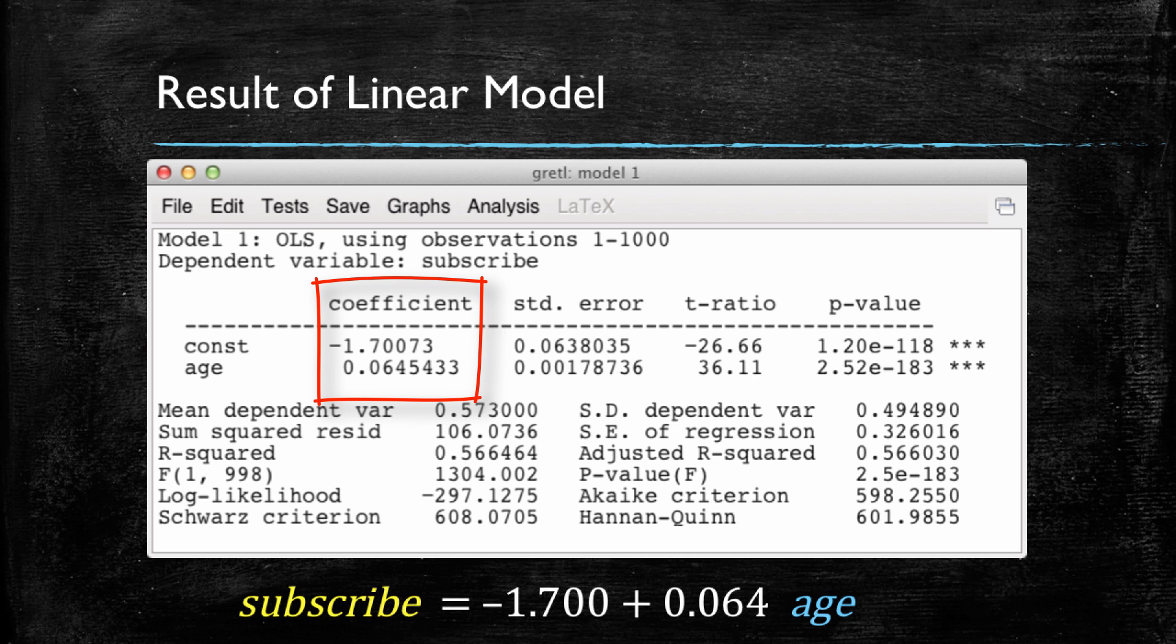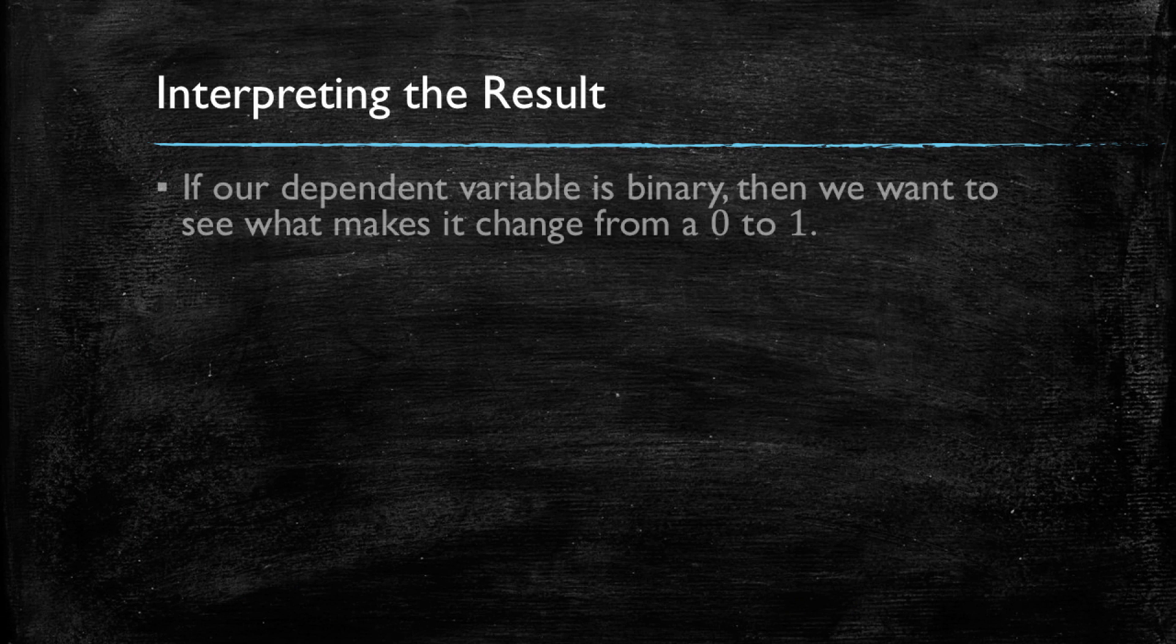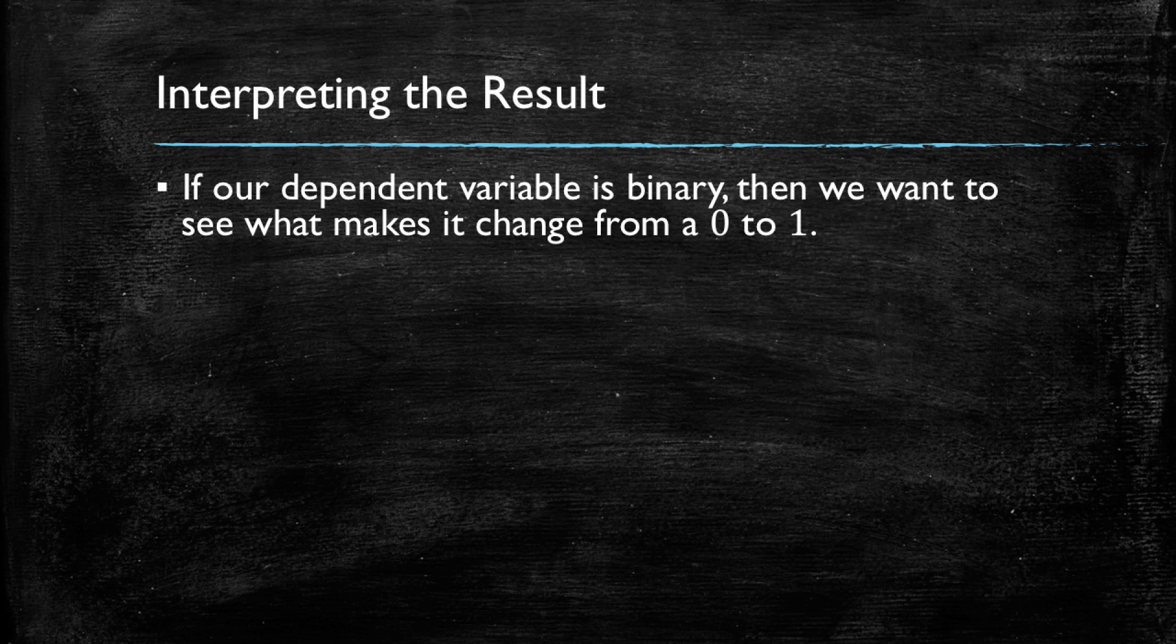So our estimated model is subscribe equals minus 1.7 plus 0.064 times age. And what does this result mean? If we recall that our dependent variable is binary, it's a 0 or a 1, and we want to make it grow from 0 to 1.